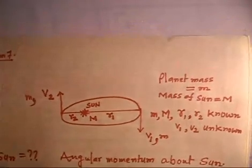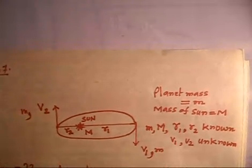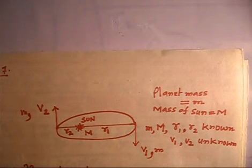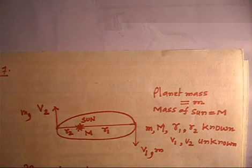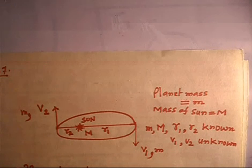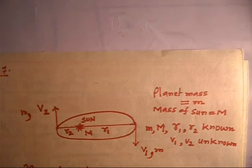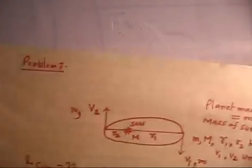Let us discuss the next problem. First, make the diagram and then we will discuss. This problem is from gravitation. In gravitation, most problems can be solved by applying three formulas. One is angular momentum conservation, which gives one equation. Another is total energy conservation, which gives a second equation. The third comes from motion in orbit — for circular motion, force towards the center equals mass times acceleration.